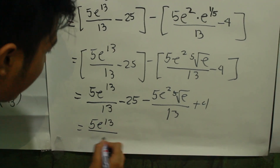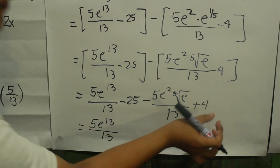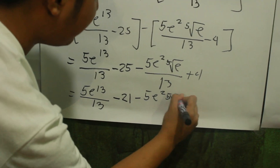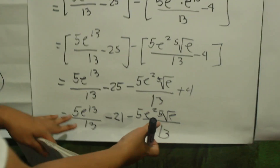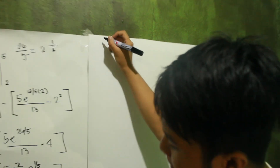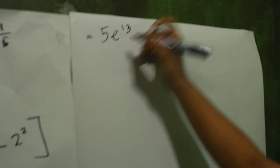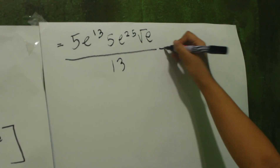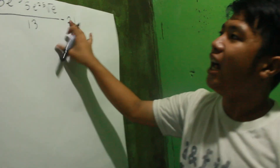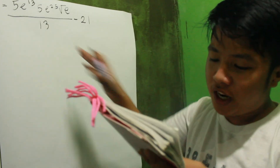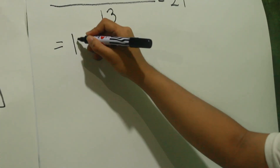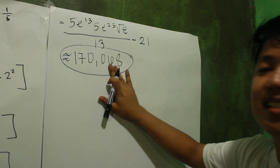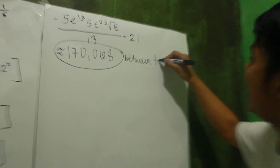So we have 5e raised to 13 over 13 minus 25 plus 4, which simplifies to negative 21. Combined, the expression becomes 5e raised to 13 over 13 minus 5e squared times the fifth root of e over 13 minus 21. If you calculate this using your calculator, you will get approximately 170,068. This is the total population growth between year 2 and year 5.